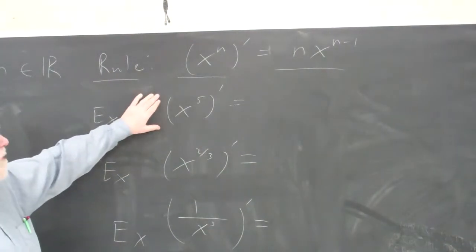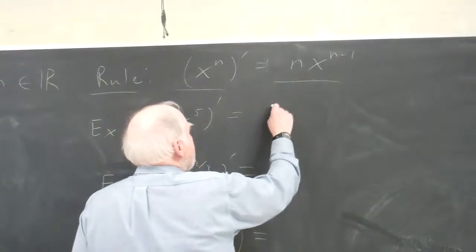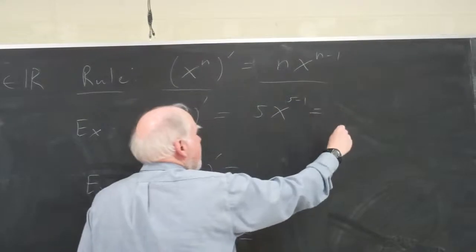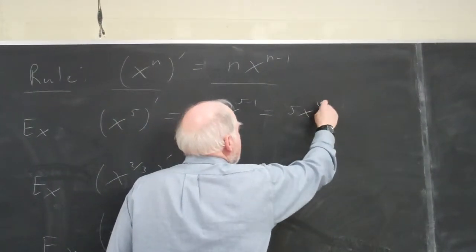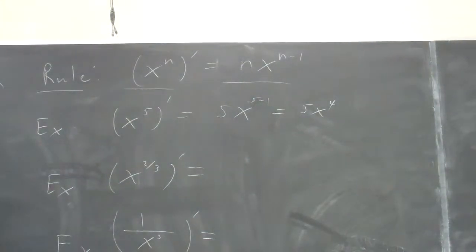But they have trouble with the algebra involved often. If it's something like x to the fifth, this is very easy. I just bring the 5 out front and subtract 1, and I get 5x to the 4th. You can even skip this step and just go right directly to 5x to the 4th.